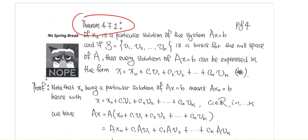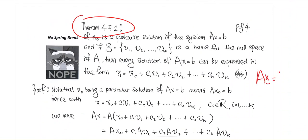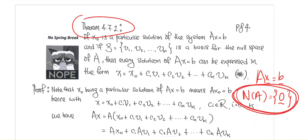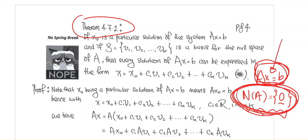Theorem 4.7.2 says that if the system already has solutions and the null space of A is trivial — meaning it only consists of the zero vector — then the solution will be unique. The null space cannot tell you whether or not the system has a solution; it only tells you about uniqueness given that a solution already exists.